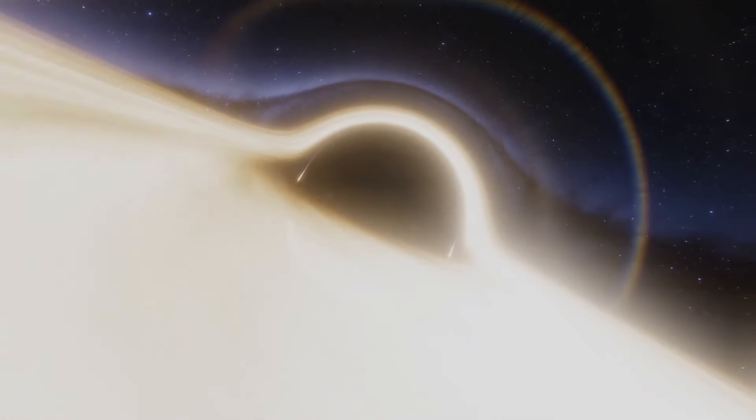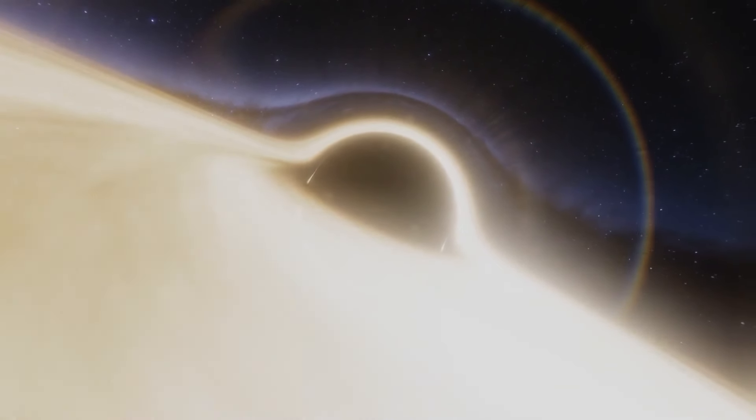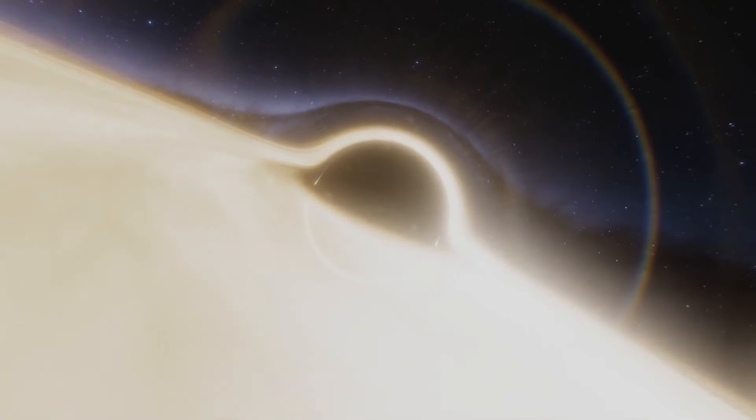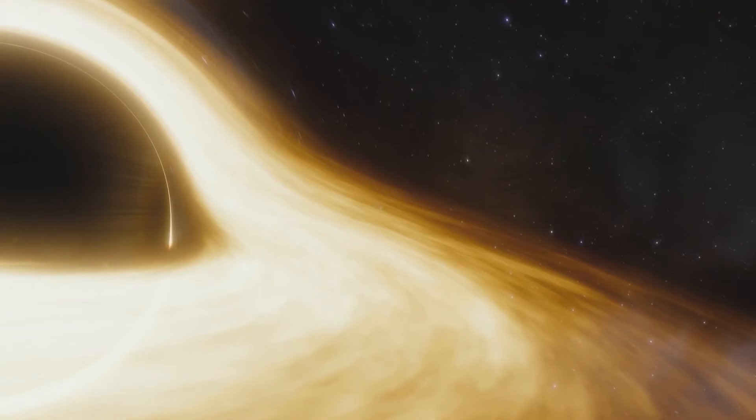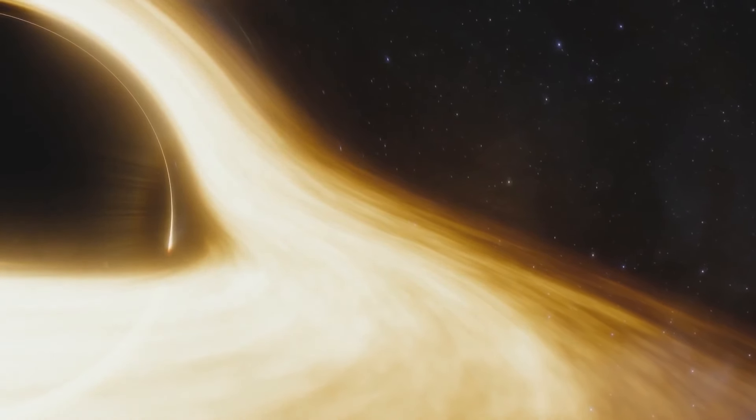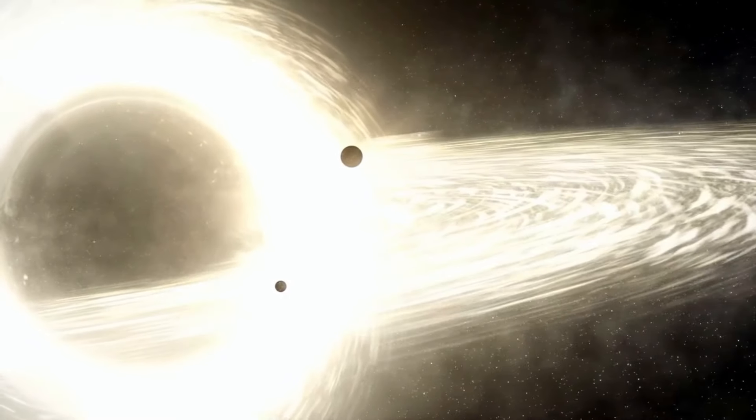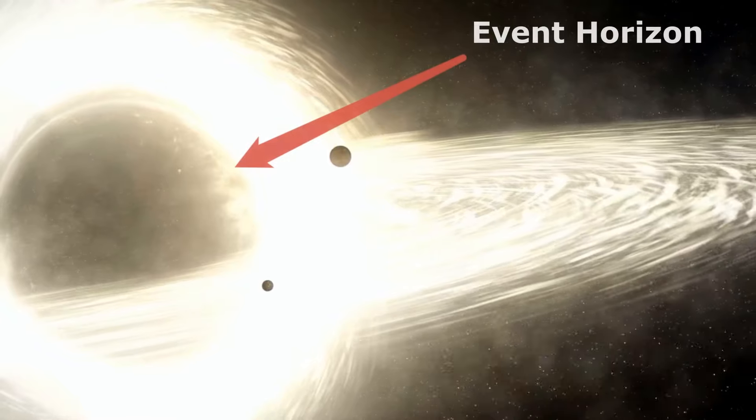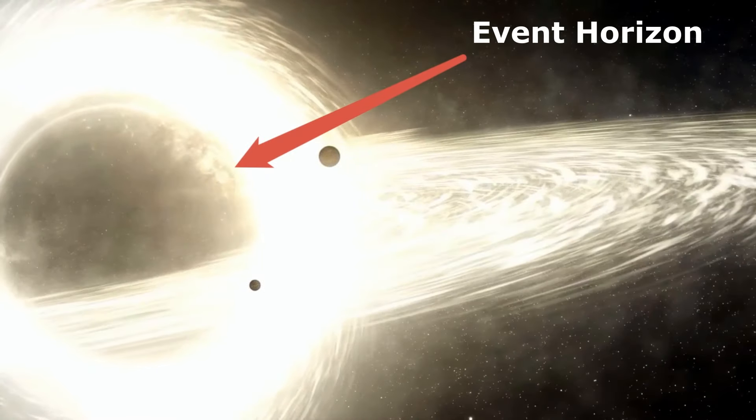When information falls into the extended horizon, it causes the horizon to get hotter. This heat is subsequently emitted as Hawking radiation, and the entire process follows a unitary evolution. Nevertheless, from the perspective of an observer plunging into the black hole, there is no significant occurrence at the event horizon. Instead, both the observer and the information they possess will ultimately reach the singularity.